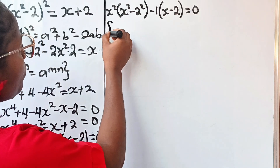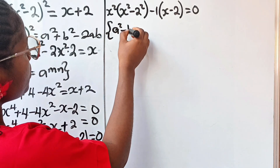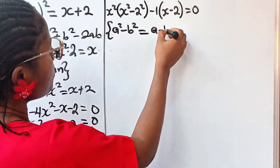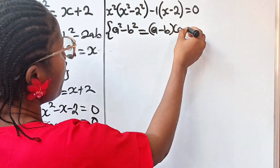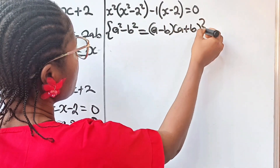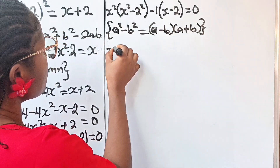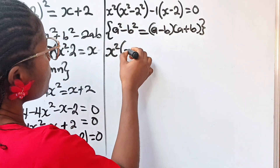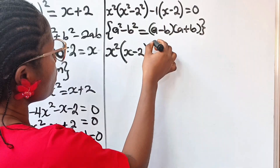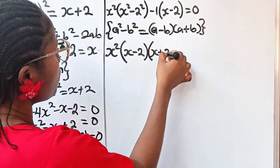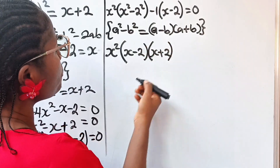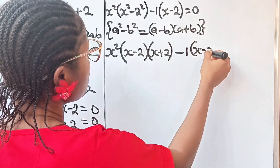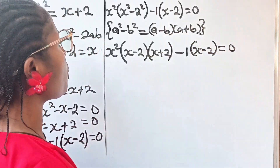Recall that a² - b² = (a - b)(a + b). So x² - 4 becomes (x - 2)(x + 2). Our expression becomes x²(x - 2)(x + 2) - 1(x - 2) = 0.